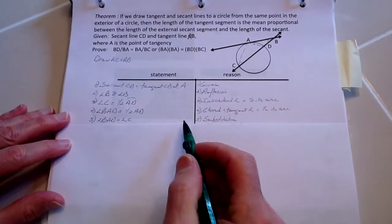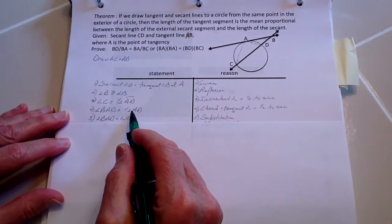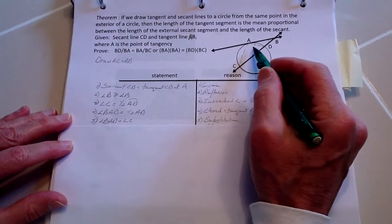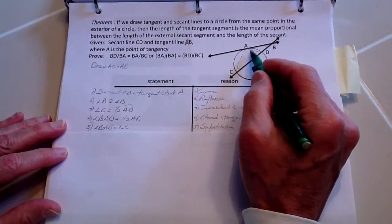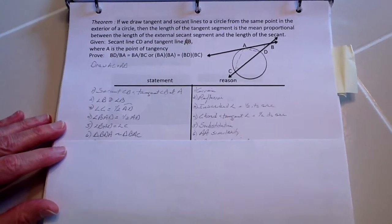Therefore, by substitution, since both of these equal the same arc, or half arc, then therefore these two angles are the same. Angle A and angle C are the same because of substitution.